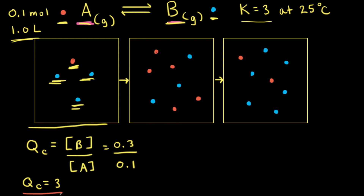QC is equal to 3 and KC is also equal to 3. When QC is equal to KC, the reaction is at equilibrium. So in this first particulate diagram, where QC equals KC, the reaction is at equilibrium.